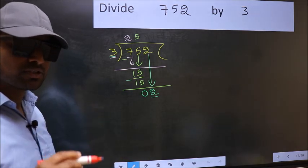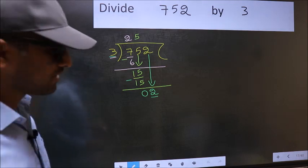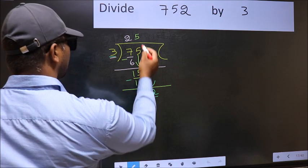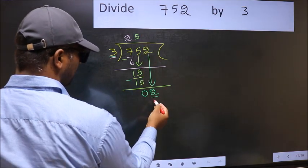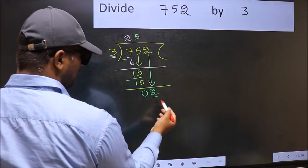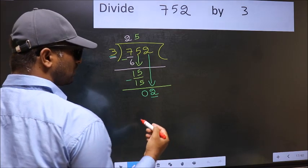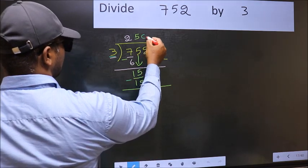Instead, what you should think of doing is, what number should we write here? If I take 1 here, I will get 3. But 3 is larger than 2. So, what we should do is, we should take 0.